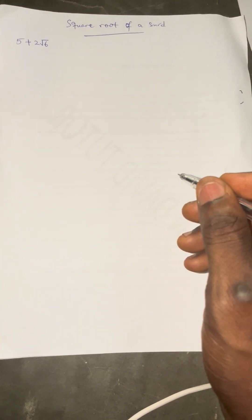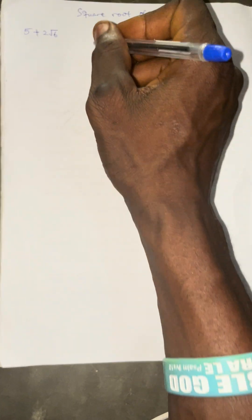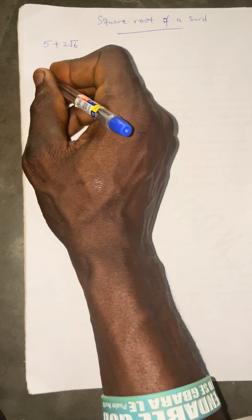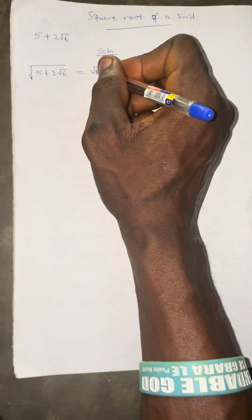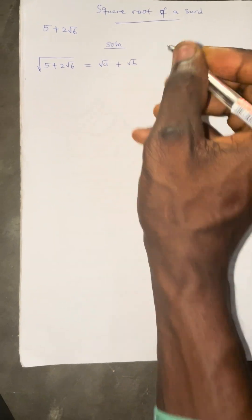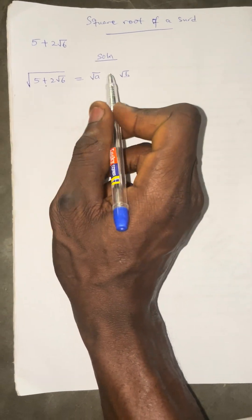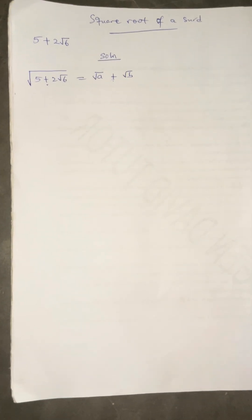Welcome to another live video on square roots of a sort. The question says: find the square root of 5 plus 2 root 6. I'm going to solve using the normal method, then use the calculator method. The square root of 5 plus 2 root 6 will be equal to root A plus root B. It is plus because the sign in the question is plus. As soon as you have minus, the sign in between will also be minus.